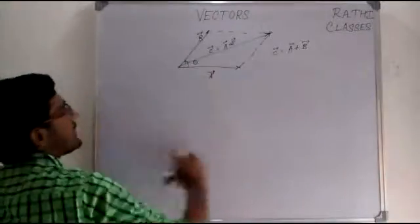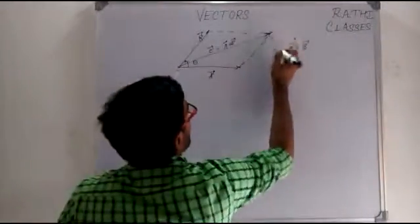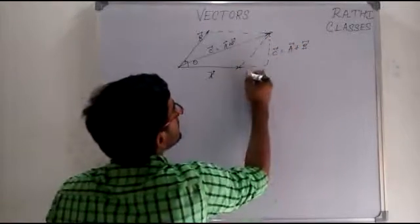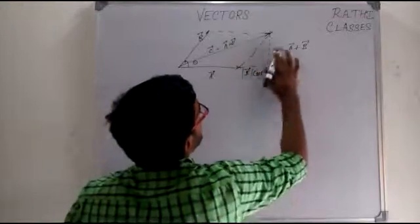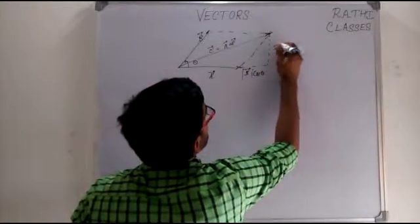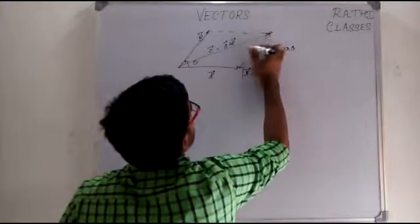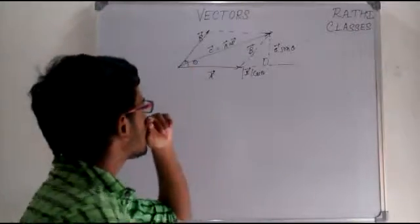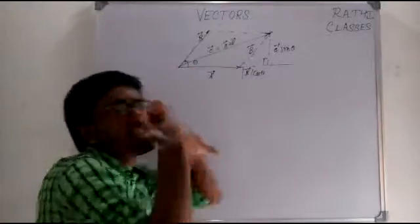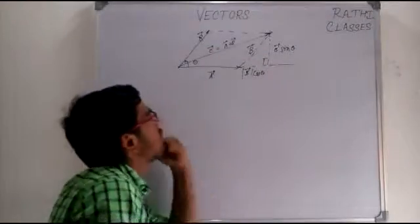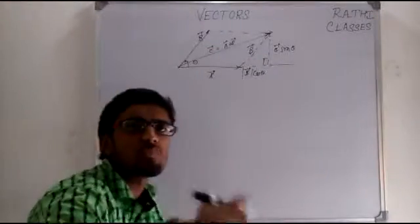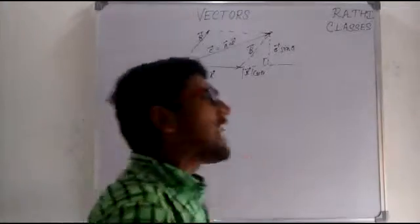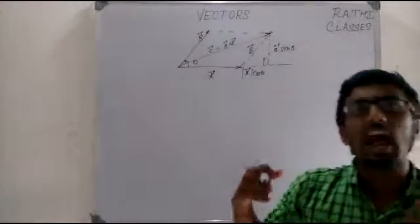To find the direction of C, I complete the parallelogram: this was mod B cos theta along the horizontal, and this was mod B sin theta perpendicular to it. This was vector B and this was 90 degrees. For specifying the direction of vector C, I need a reference point — any direction is specified with respect to a reference point.